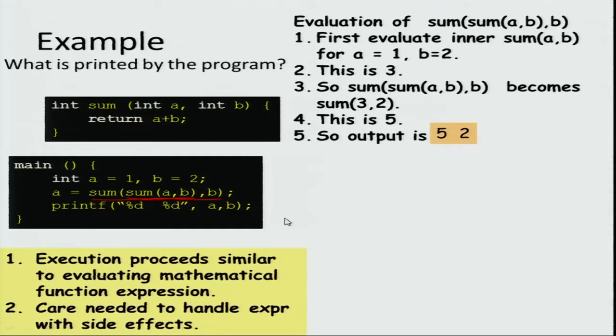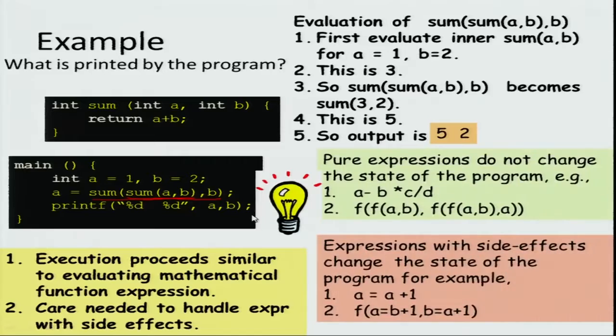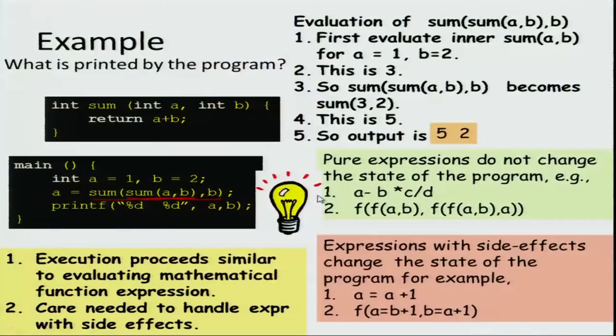One thing we need to take care of is handling expressions with side effects. Let us classify expressions into two kinds. First are pure expressions — normal mathematical expressions like a minus b star c, c slash d, and so on. Evaluating functions normally does not have any effect other than returning a value; other than that they have no effect.